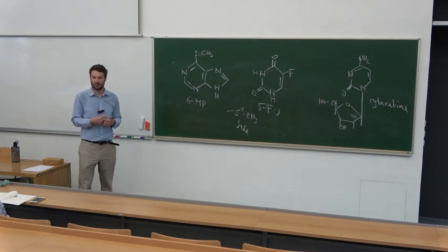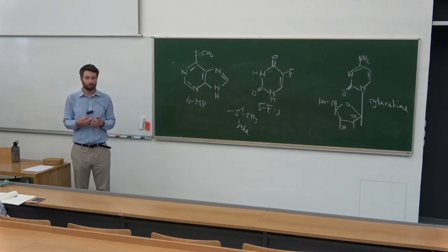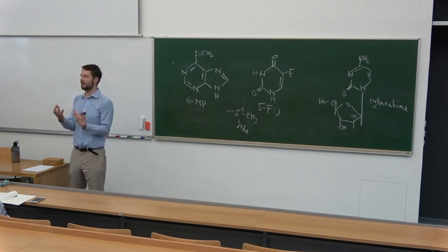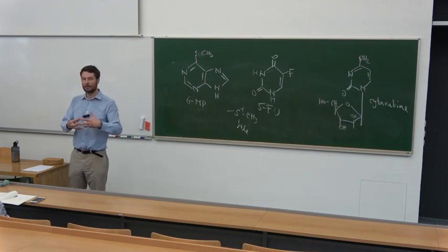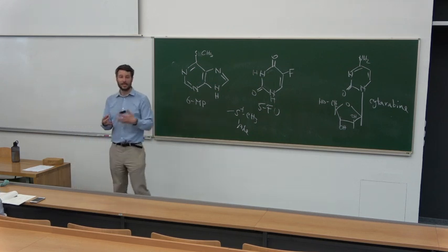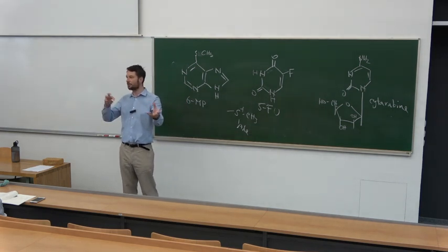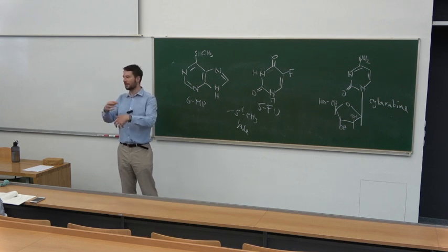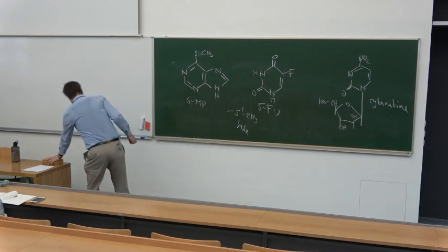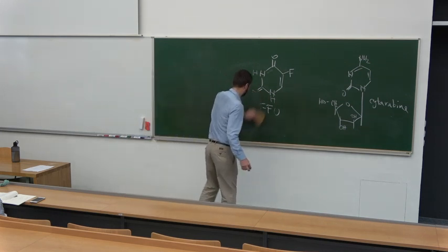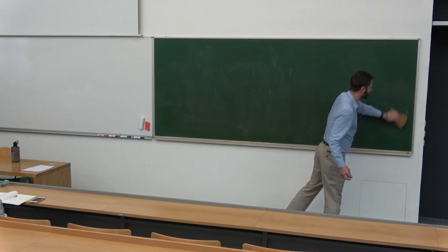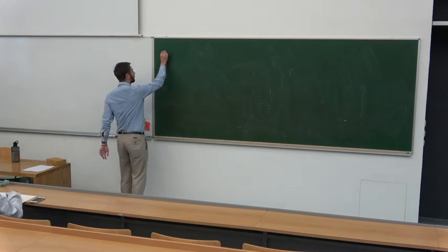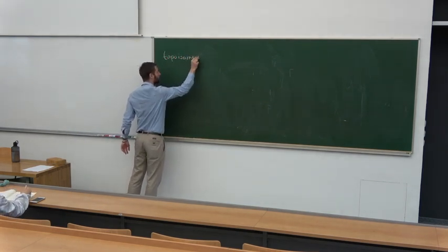The next group of compounds interferes with the physical manipulation of DNA, especially during cell division and replication. In replication and transcription, the DNA must be unwound. As the double helix is unwound, tension builds and the DNA becomes supercoiled — clumped together like twisted rope attached to a pole. Topoisomerases solve this by cutting the molecule to release tension so DNA manipulation can continue.